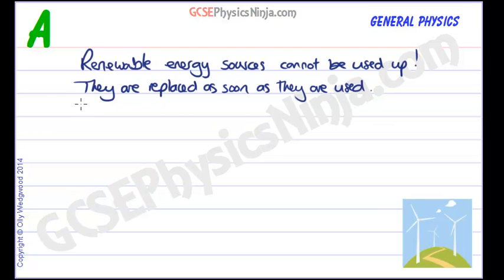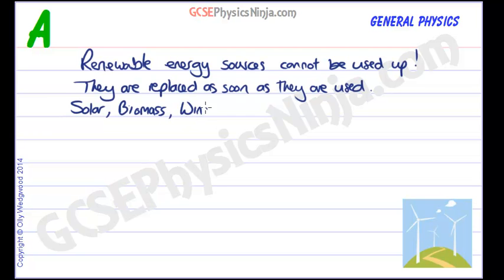Some examples of renewable sources include solar energy. We've got biomass — that's growing plants which we can then use for energy, and that comes from the sun of course. We've also got wind power, wind turbines, and wind actually comes from the sun as well.